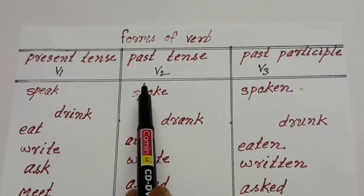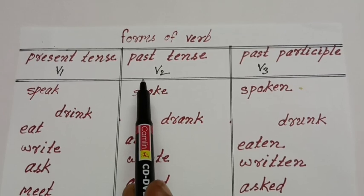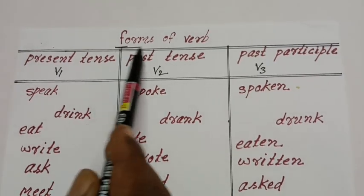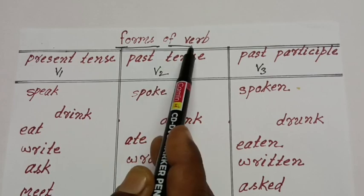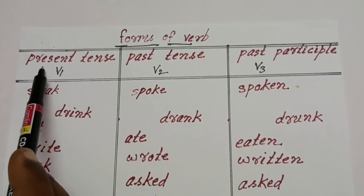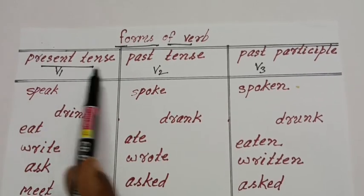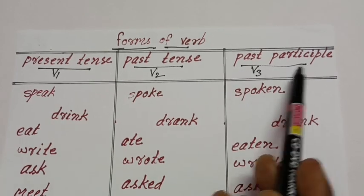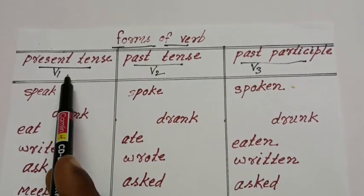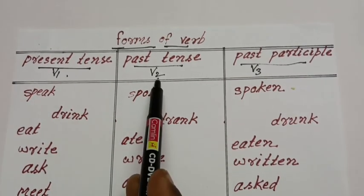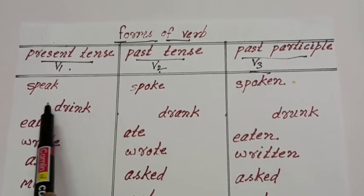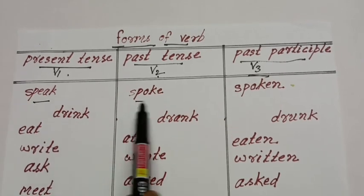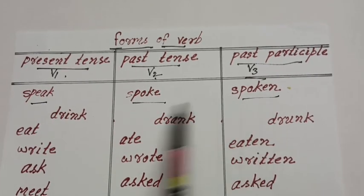Before that, I am taking the forms of verb. Forms of verb: present tense, past tense, past participle — first form, second form and third form. For example: speak, spoke, spoken.